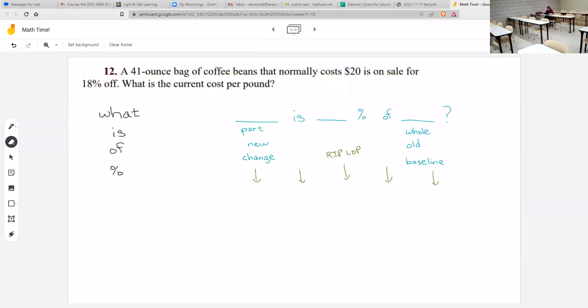There's only one situation with really two numbers. There's a red herring number - which number can we just cross out? Yeah, we don't care that it's 41. So there's two numbers: twenty dollars and eighteen percent.